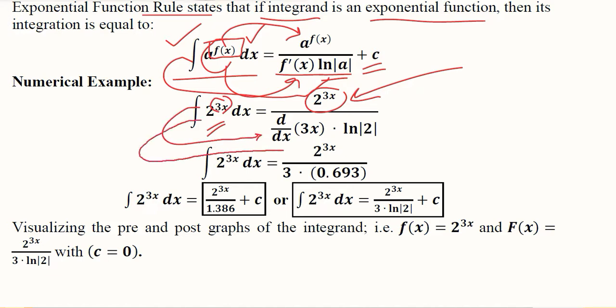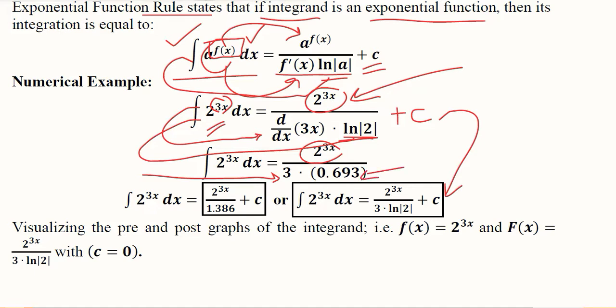And 2 is the base, the natural log of which we write in the denominator as a product alongside the derivative of the exponent. The numerator remains the same, and the derivative of the exponent gets solved as well as the natural log of the base, and then we introduce the arbitrary constant c.